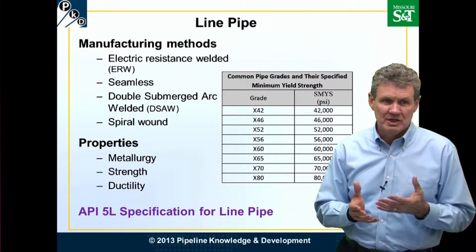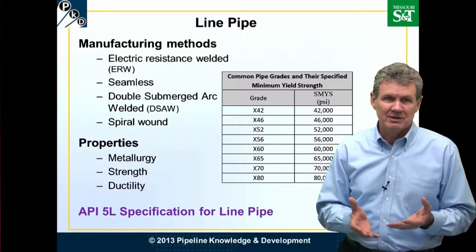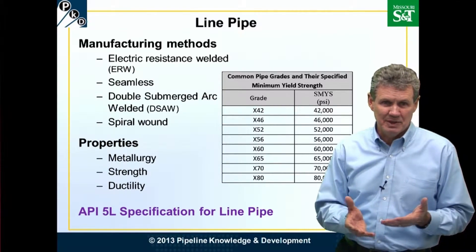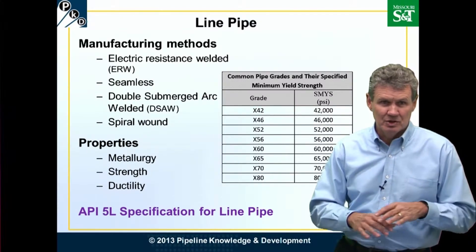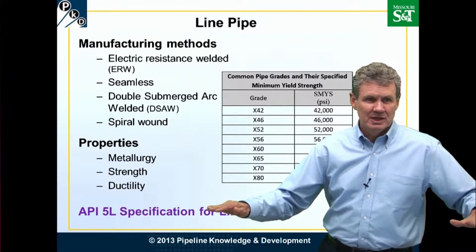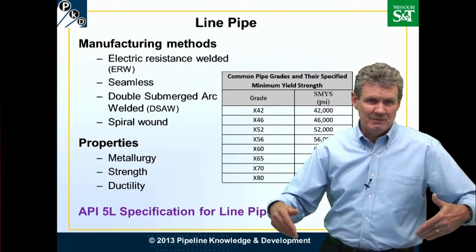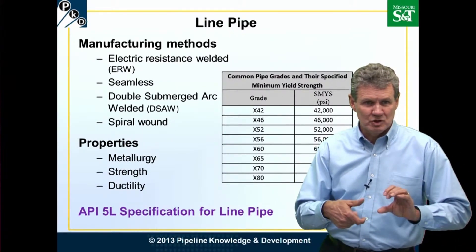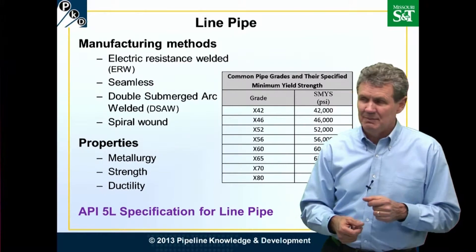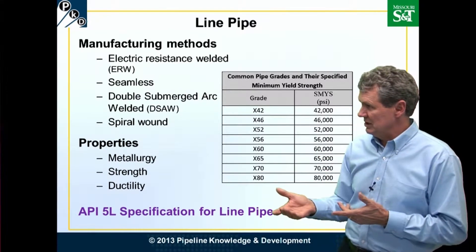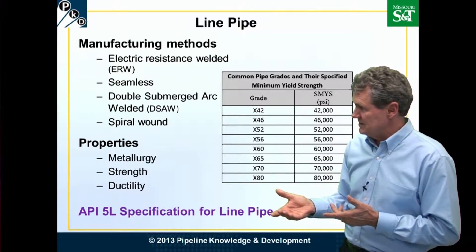We'll specify the properties and specify the parent material — the flat pieces of steel that will go into the pipe. Then we'll take it and roll it up or twist it up and make it into pipe, which then has those metallurgical properties.